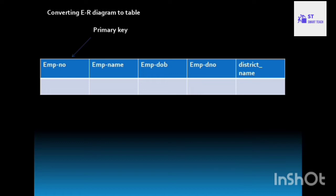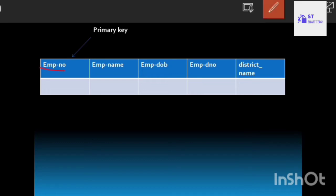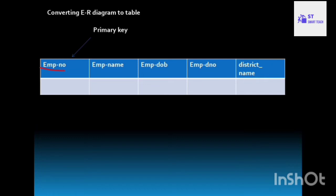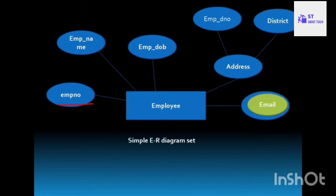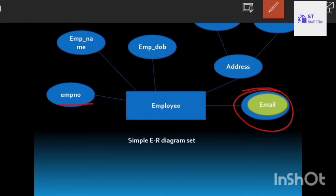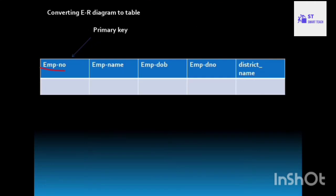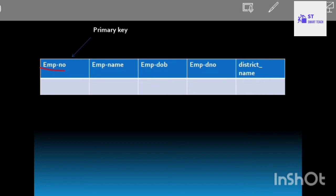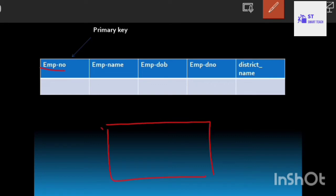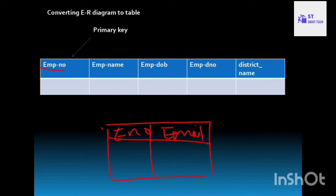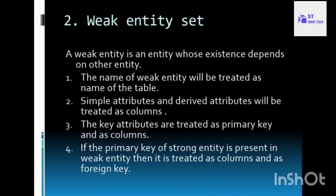The entity name is employee, so the table name is employee. All single-valued attributes and derived attributes become columns. Employee number is the primary key. Email is a multi-valued attribute because one employee can have multiple emails — so it must be ignored here and placed in a separate table. That separate table contains only employee number and email as columns.